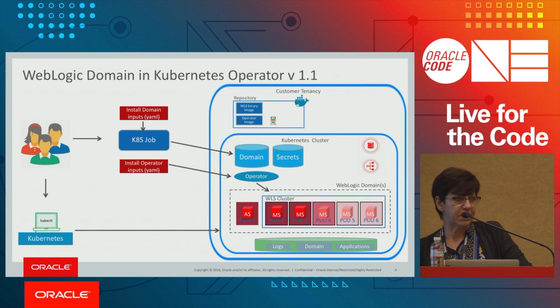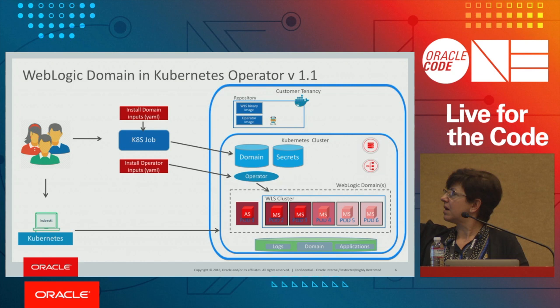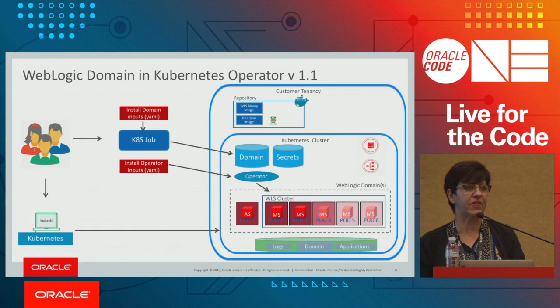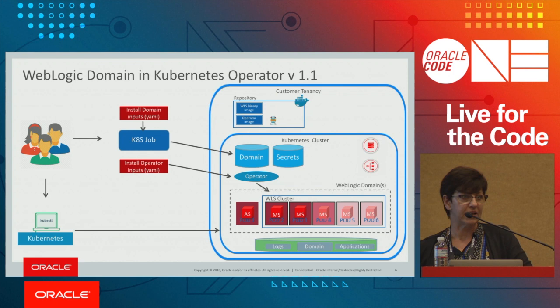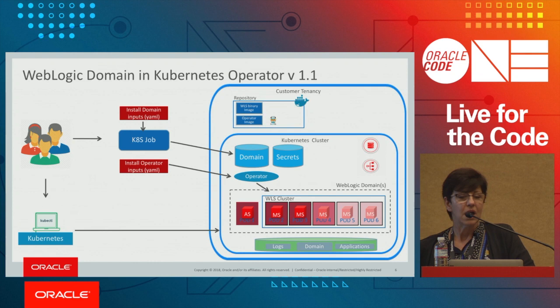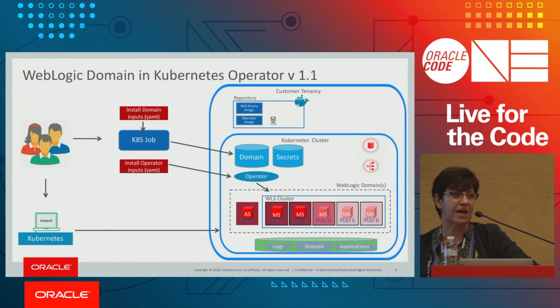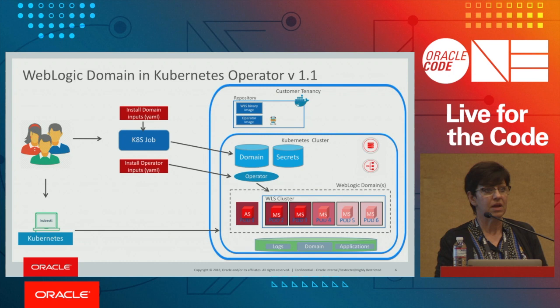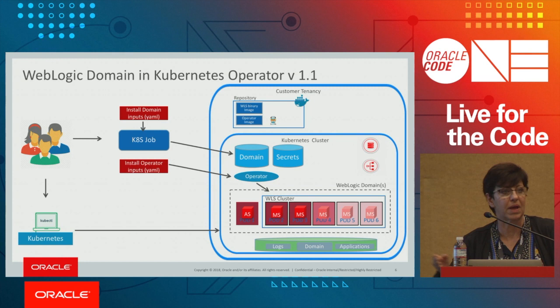Once configured, a script starts the operator. Users also provide inputs for the domain itself — things like the admin port, the container image to use, the namespace for the domain. We also provide a unique domain UID so every Kubernetes resource created for that domain is decorated with it, telling the operator which services and resources it needs to administer.